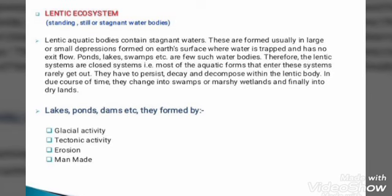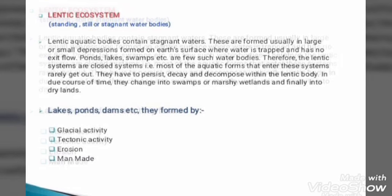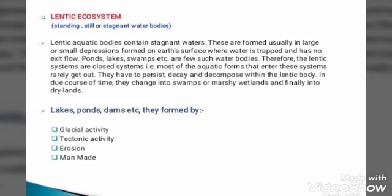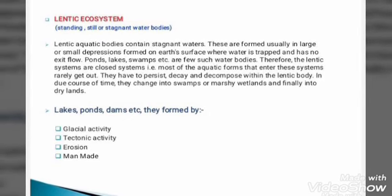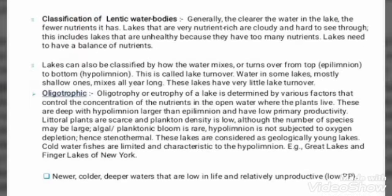Lentic ecosystems are standing still or stagnant water bodies. These are formed usually in large or small depressions formed on the Earth's surface where water is trapped and has no exit flow. Some examples of lentic ecosystems are lakes, ponds, dams, etc. They are formed by glacial activity, tectonic activity, erosion, or some are man-made.